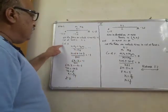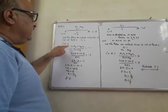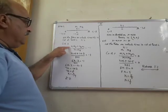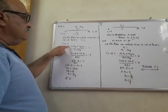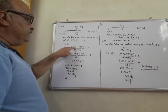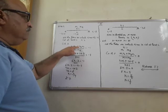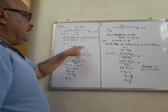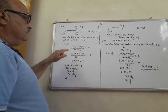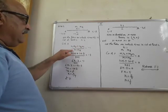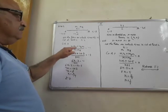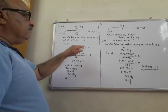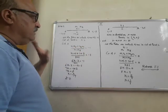Let me show you the section formula for x-coordinate: x1 into m2, plus x2 into m1, upon m1 plus m2, equal to minus 1.